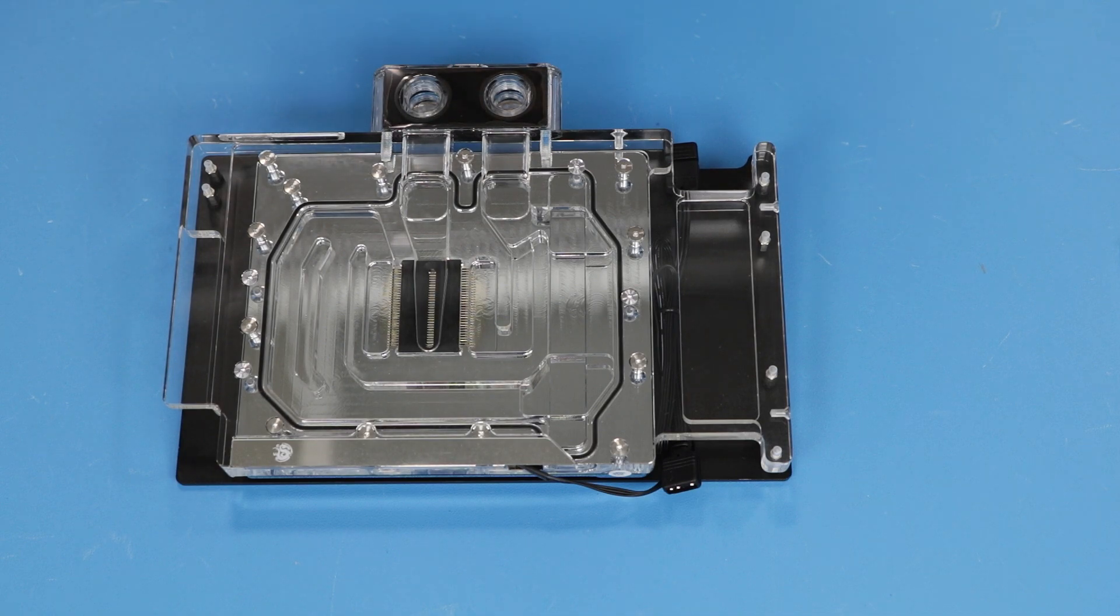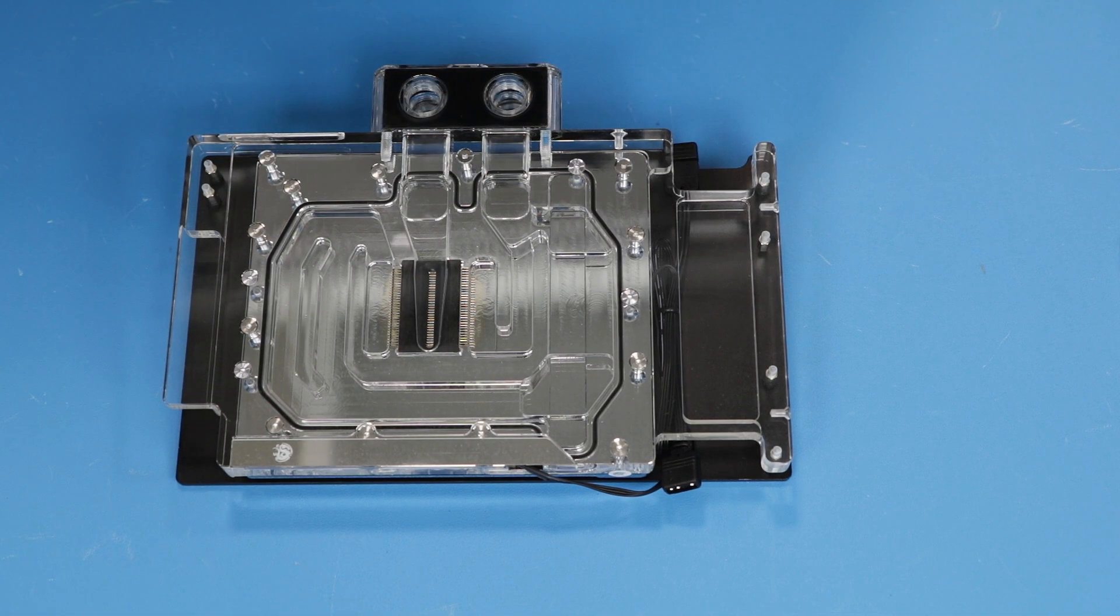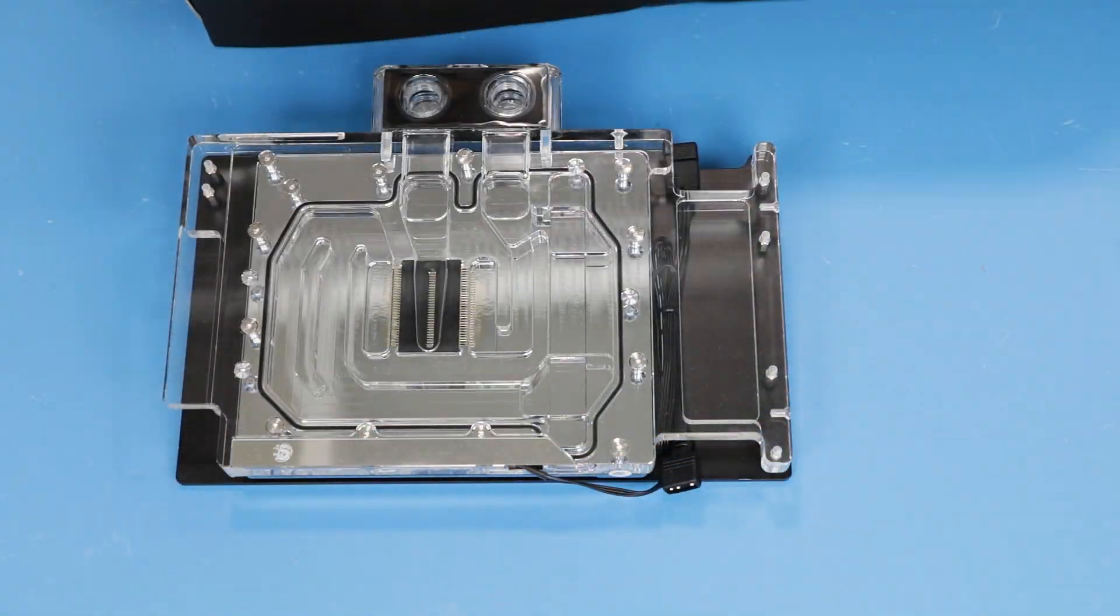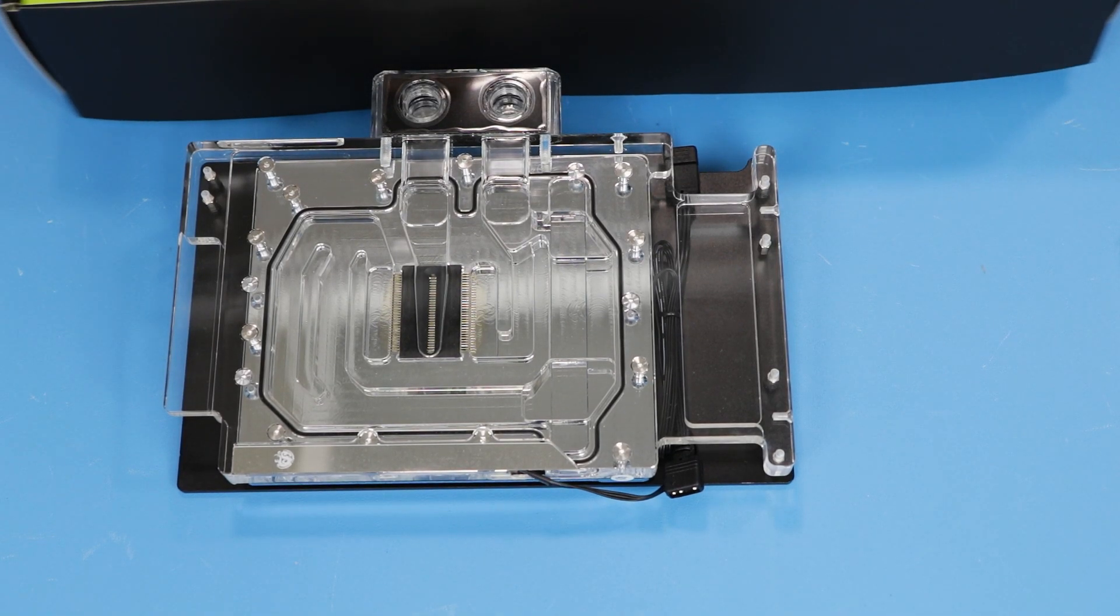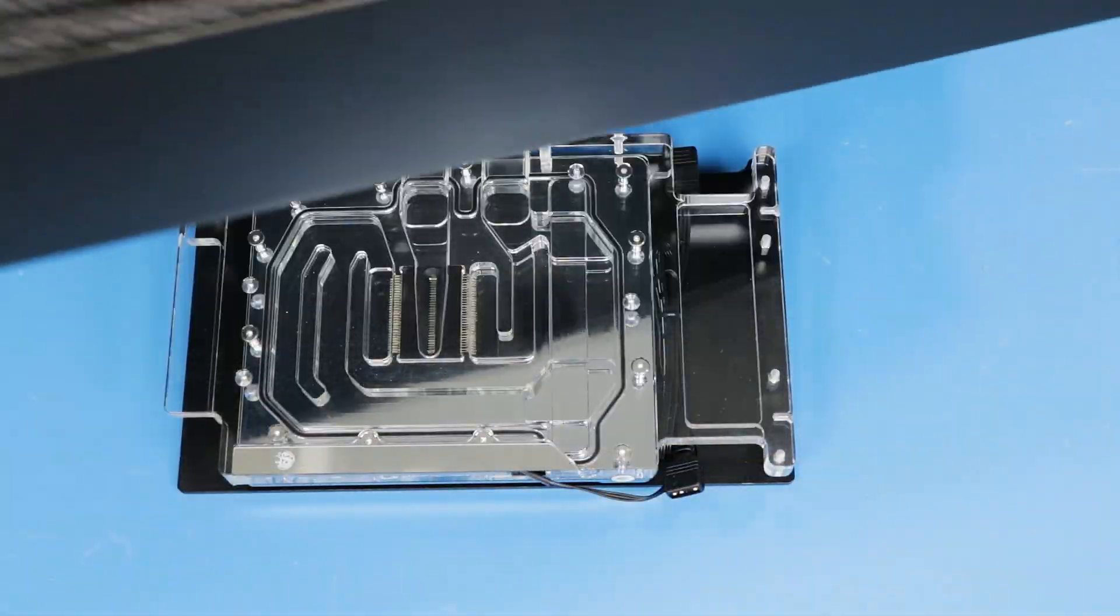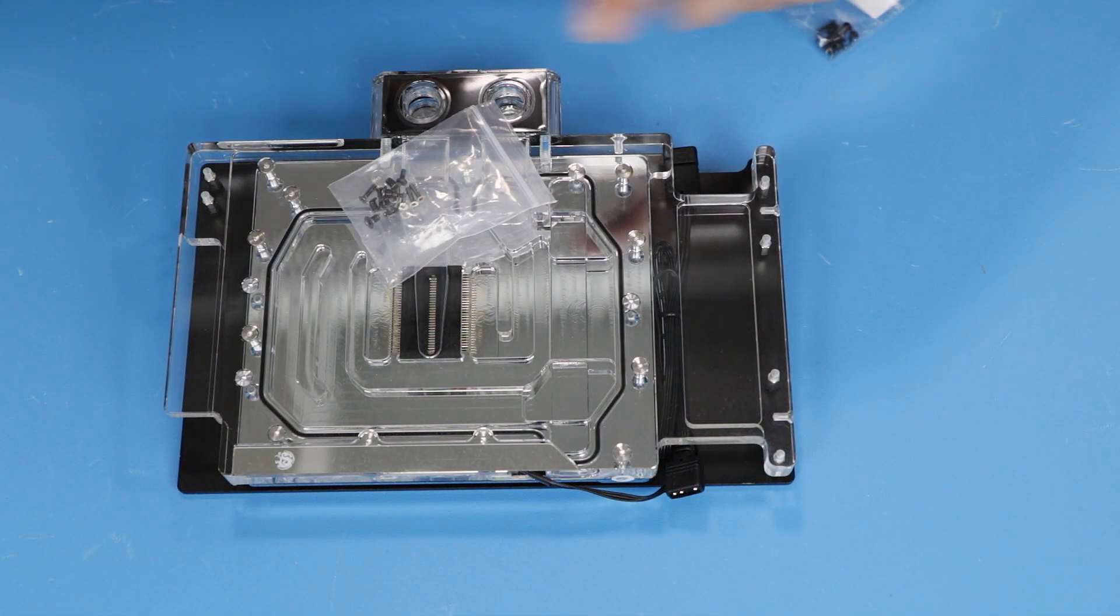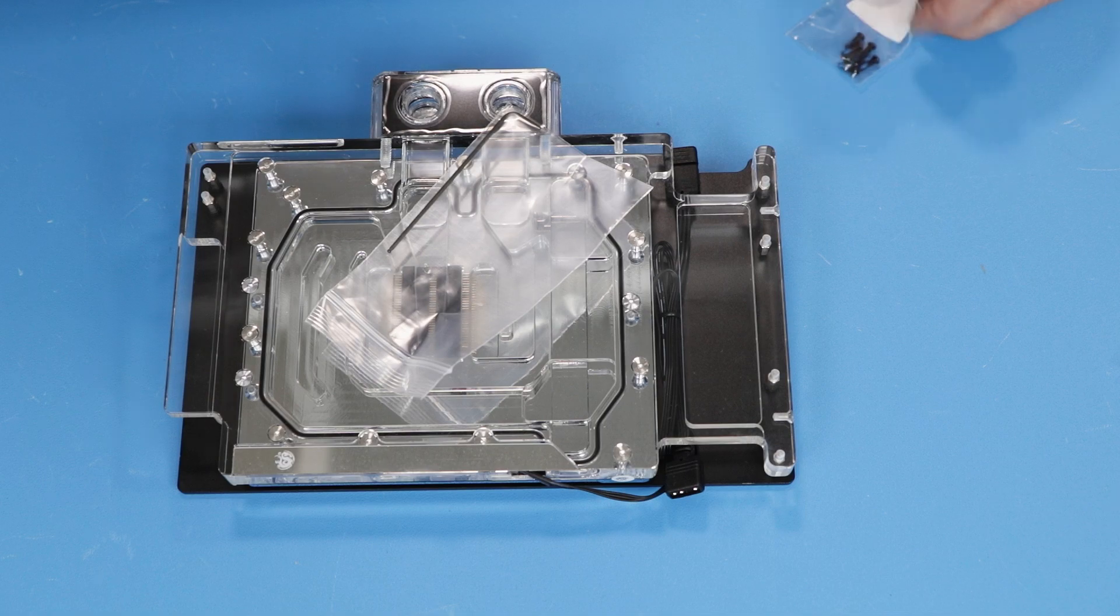The block comes in a humongous size box. You can see it's basically double size and inside is pretty much empty. We have absolutely nothing except the block itself and two little bags, one with a few screws.